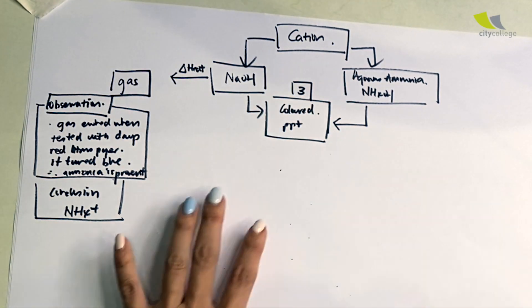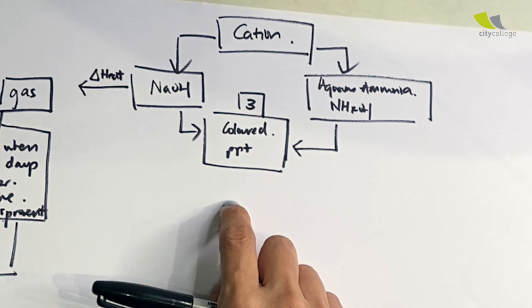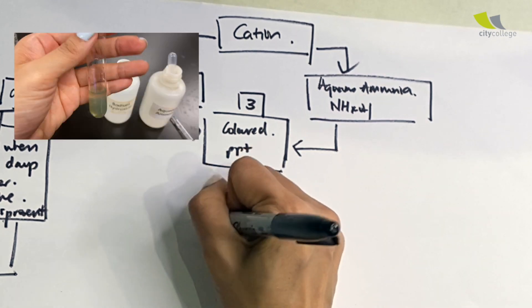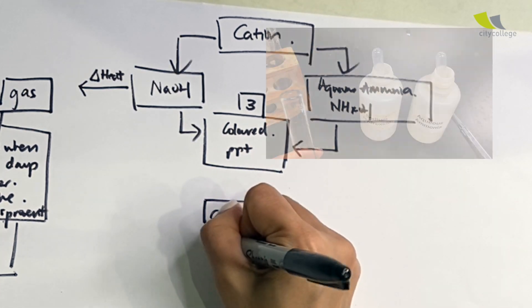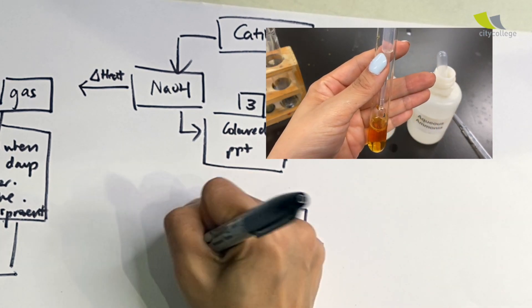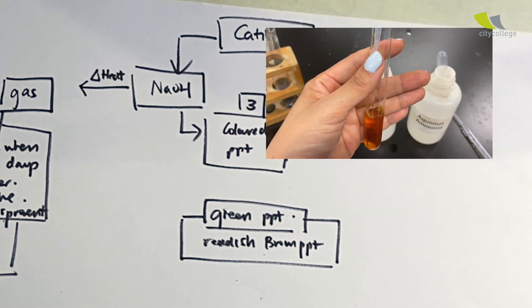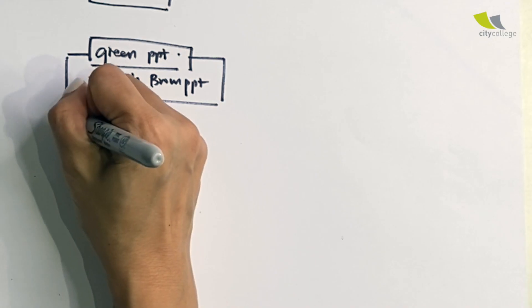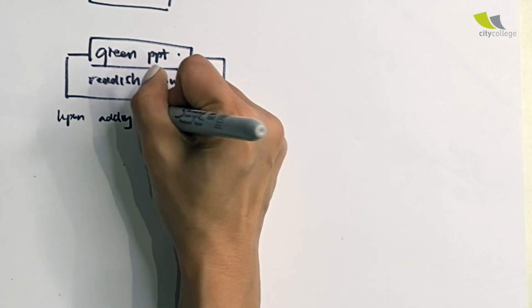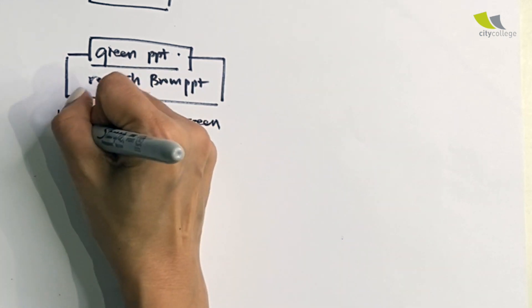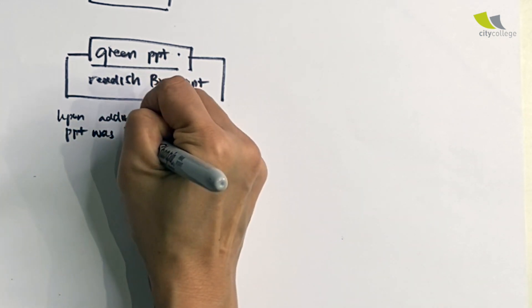Now, how about the colored ones? There are three colors: we have the green, reddish brown, and blue. I'm going to write down the green precipitate here and the reddish brown precipitate. For these two, when you add NaOH, upon adding NaOH, green precipitate was observed.